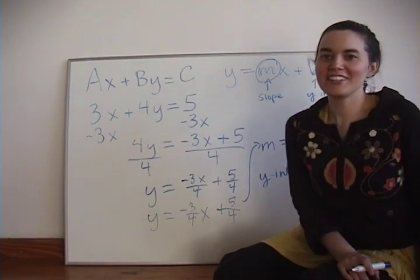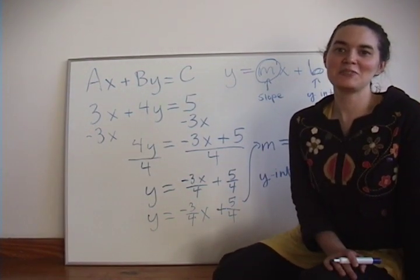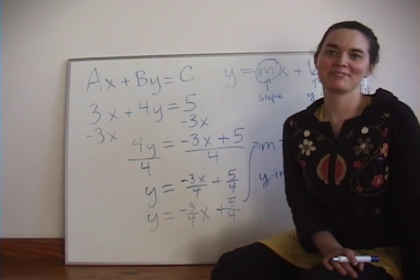So that's how you convert from standard form to slope-intercept form. Thank you.